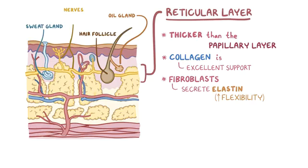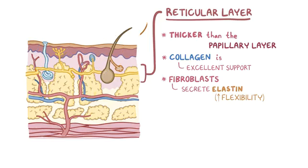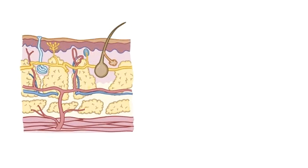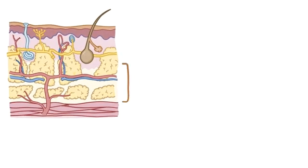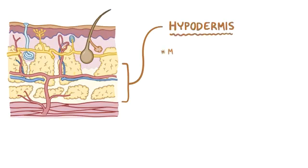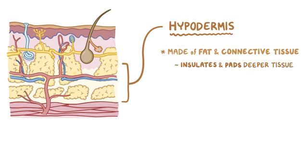A type of nerve ending found in the reticular layer detects pressure or vibration, which allows you to feel someone grabbing your arm. Finally, just below the reticular layer is the hypodermis. It's made of fat and connective tissue that insulates and pads the deeper tissue, and anchors the skin to the underlying muscle.